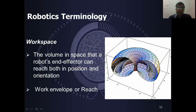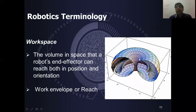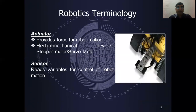The workspace is also called work envelope or reach. The end effector can move in various positions and orientations within this space. The next term is Actuator — robots use actuators to convert energy into motion for force.